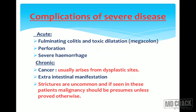Complications of severe disease can be divided into acute and chronic. Acute complications include fulminating colitis with toxic megacolon, perforation, or severe hemorrhage. In chronic complications, malignancy arises from dysplastic tissue; there may be extra-intestinal manifestations; and strictures are uncommon — if seen, malignancy must be ruled out unless proved otherwise.